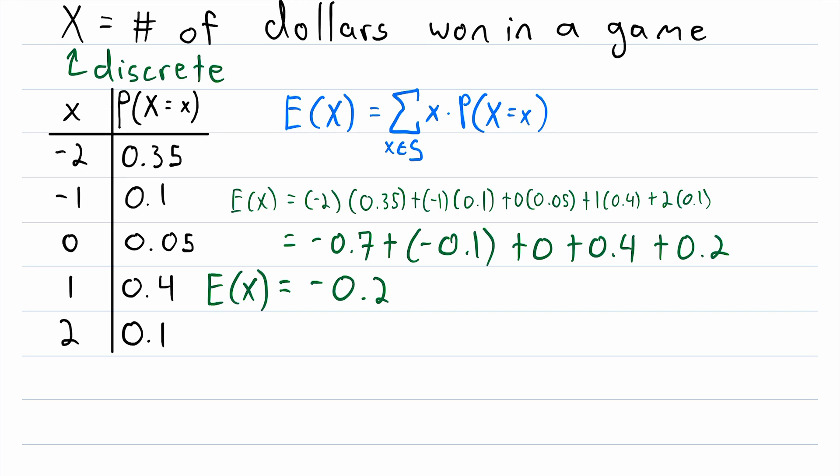So I hope you think that this is as rad as I do. One more time, the expected value of a discrete random variable is calculated by taking each possible outcome of the random variable, multiplying it by its probability, and then adding all of those products together. And that's how you find your expected value.